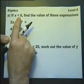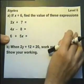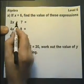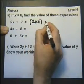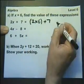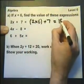If x is 6, find the value of these expressions. A little bit of substitution. 2x means 2 times x. And if x is 6, it means that. 2 times 6 is 12 plus 7 is 19.